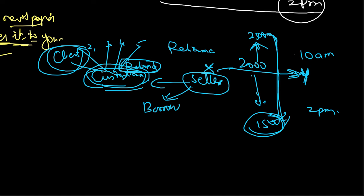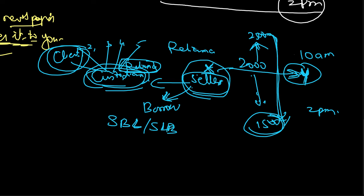When the seller contacts the custodian asking to borrow Reliance shares, the custodian facilitates the borrowing from Client 1. The seller borrows the shares from Client 1 through the custodian. Once the seller or Mr. X gets those borrowed Reliance shares, they are transferred to Mr. Y — fulfilling the commitment made to Mr. Y. This is called the Securities Borrowing and Lending process, also called Securities Lending and Borrowing.